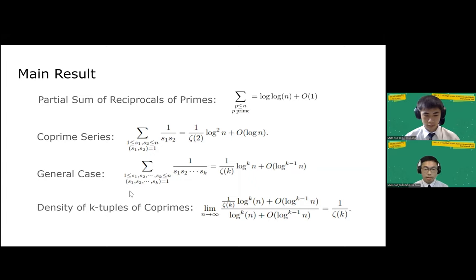So our starting point of the research is from the partial sum of reciprocals of primes, which it was well known that it is asymptotic to log of log of n plus O of 1. So we thought it would be interesting to consider replacing the prime with co-primes. And we came, in fact, with a formula for that. And later on, we also extended to arbitrary many tuples of co-primes. And we proved that it is asymptotic to log k of n.